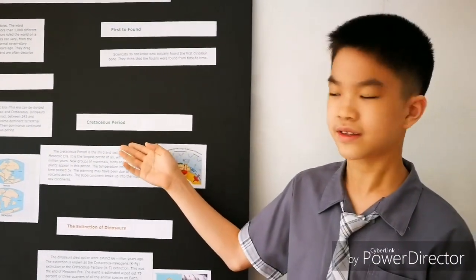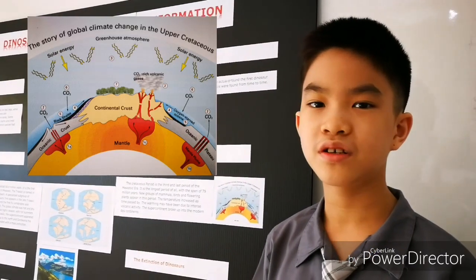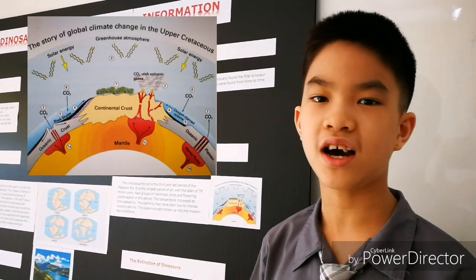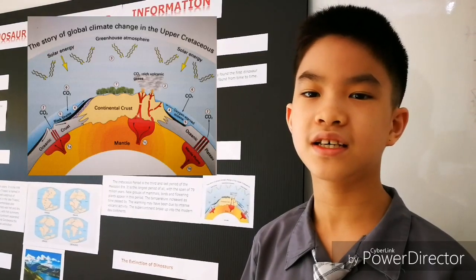The Cretaceous period is the third and last period in the Mesozoic era. It lasted 79 million years. The temperature in this period was very hot. It may be caused by the intense volcanic activity.